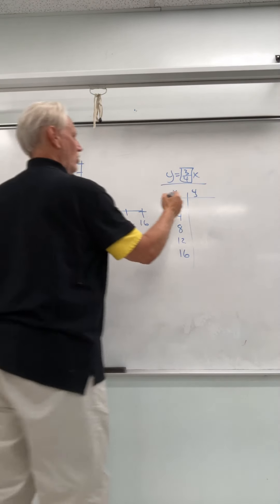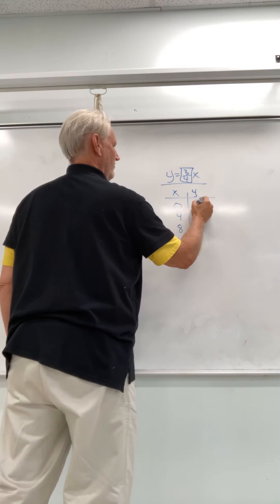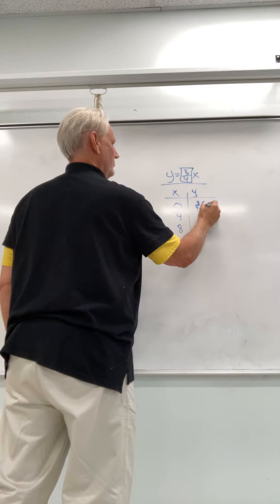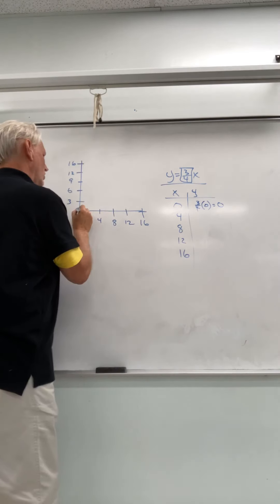That means I'm going over 3 and up 4. So if I set up my equation here, I have 3 fourths times 0 equals 0. So my point is going to be 0, 0.